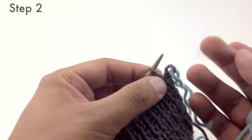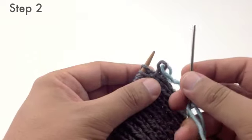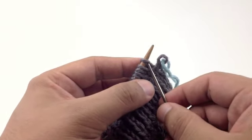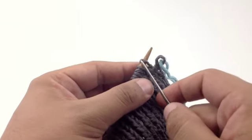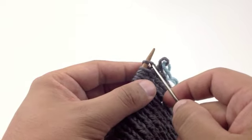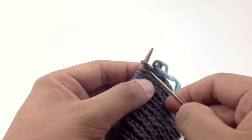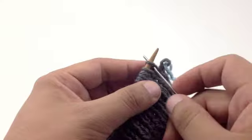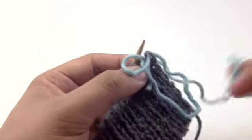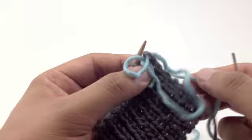Next we're going to insert our tapestry needle knit-wise for step two into the next stitch on our needle, which is a purl stitch, and we're going to go knit-wise and pull that tight as well.